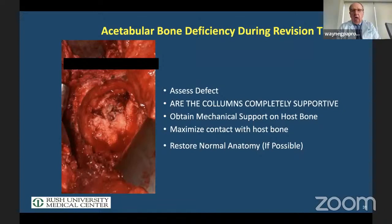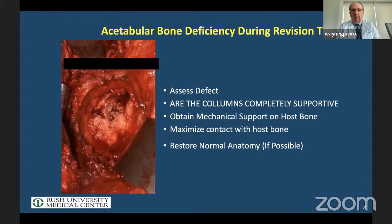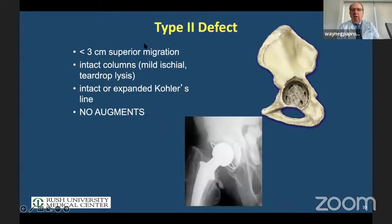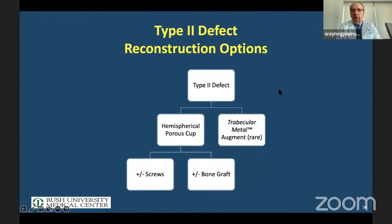When looking at a case, if posterior wall and anterior superior bone are present, it tells you the columns are supportive — something you should have noticed preoperatively. An X-ray is a 2D representation of a 3D structure. If the teardrop is intact and migration is less than 3 cm, you can suspect there will be enough support superiorly and anterosuperiorly. In that situation, you really only need a little cancellous graft and a cup with screws.